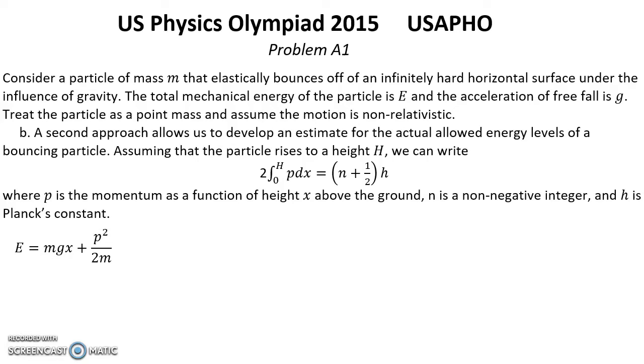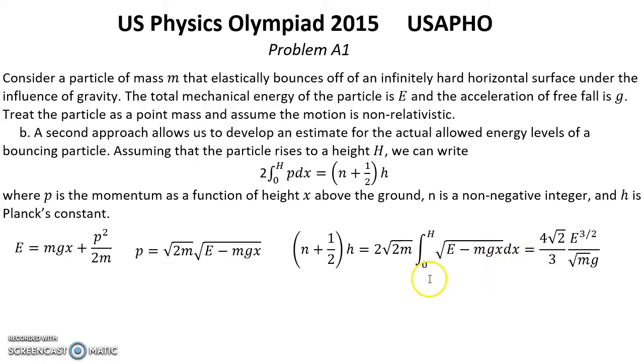First of all, we can write that energy equal potential energy MGH plus kinetic energy. Momentum square over 2M. And we can express this P from this formula and use the presented formula. Momentum equal this formula. And now we can use this to this integral. And we have to take this integral. That will be... And for this integral we have this answer.